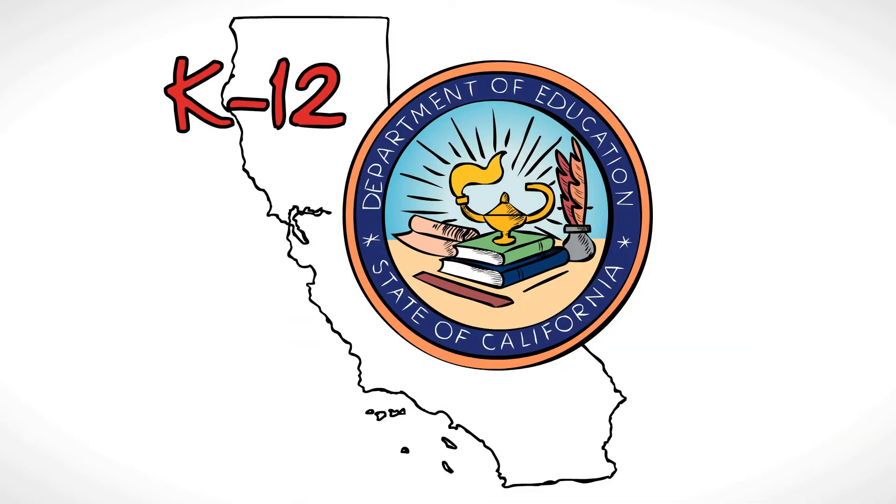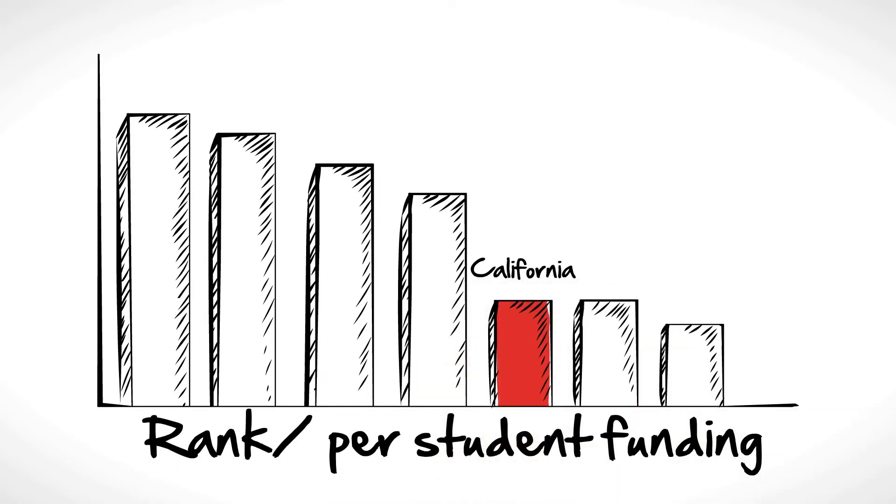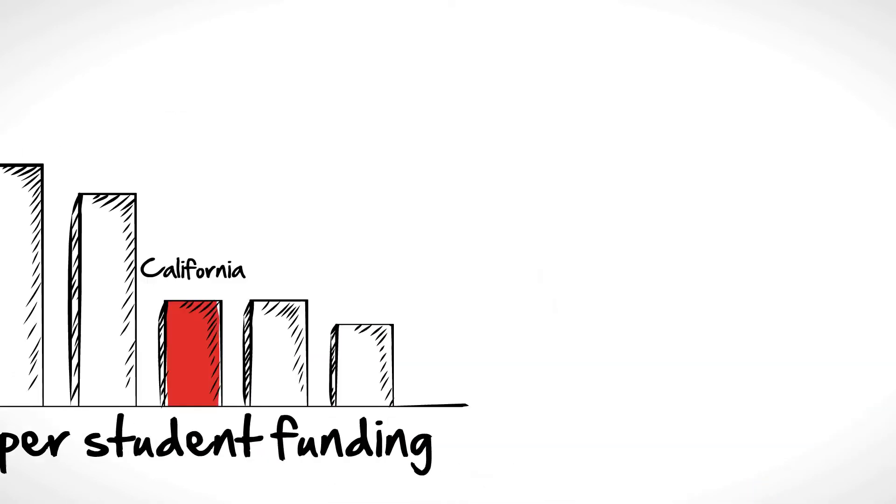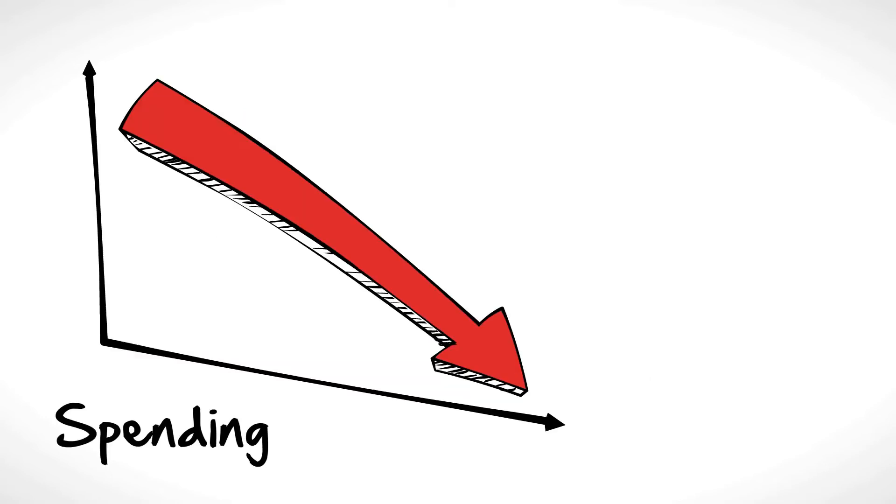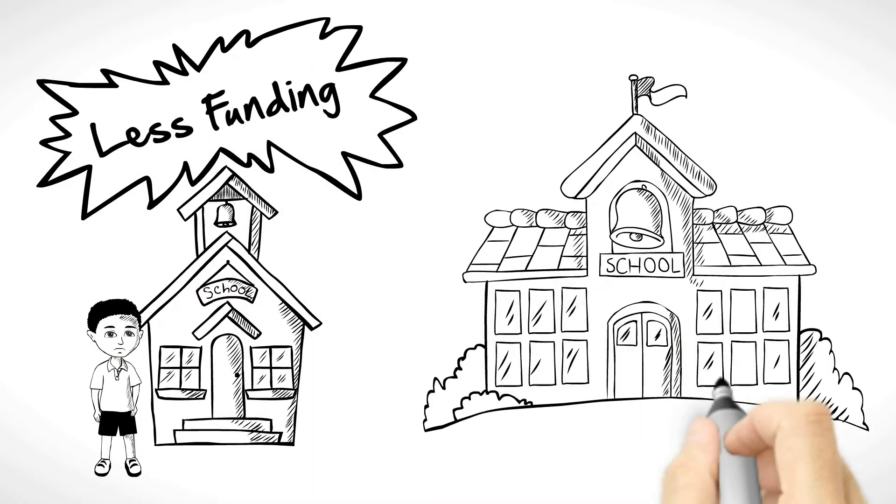K-12 education in California is in crisis. Not only does California rank near the bottom in per-student funding and spending has been drastically cut, but students in low-income schools receive less funding than kids in well-to-do neighborhoods.